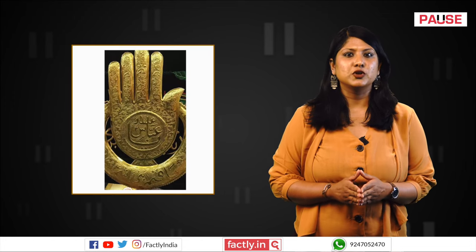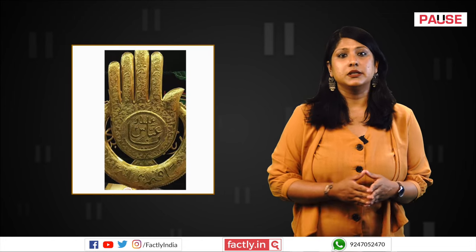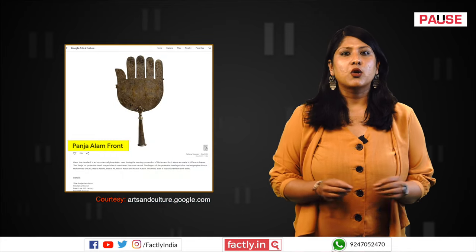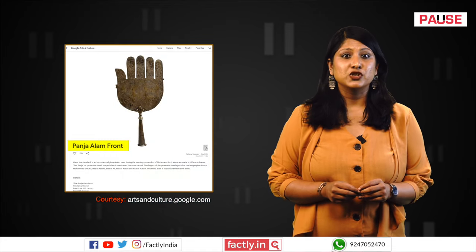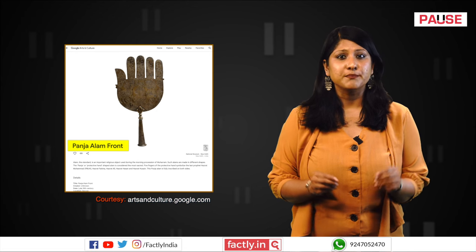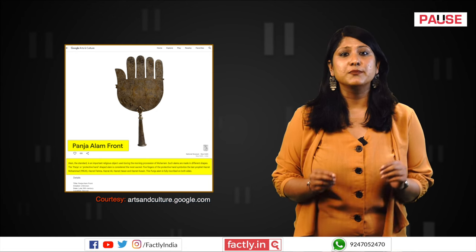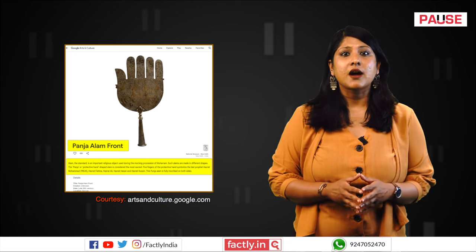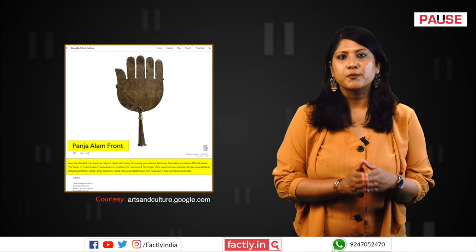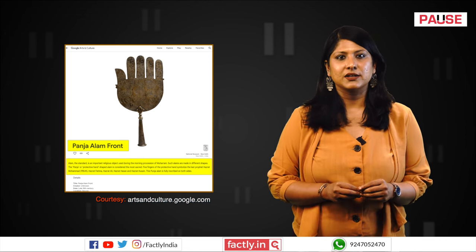Reverse image search of the image on the left side of the post led to similar images. This symbol is known as Punjab Alam. According to the Delhi National Museum, the Punjab Alam holds significant religious importance and is used during the morning procession of Muharram. These are crafted in various shapes, with the claw or protective hand shape being regarded as the most sacred.